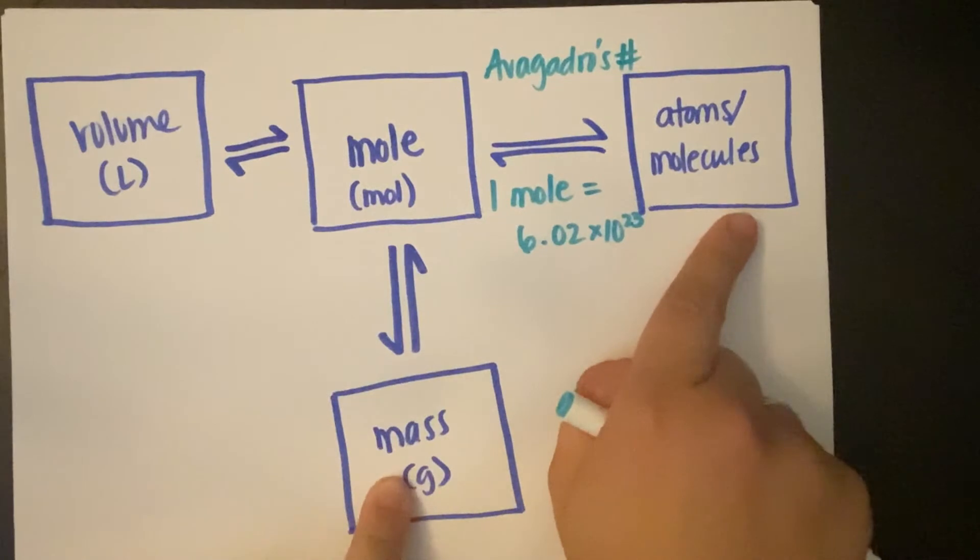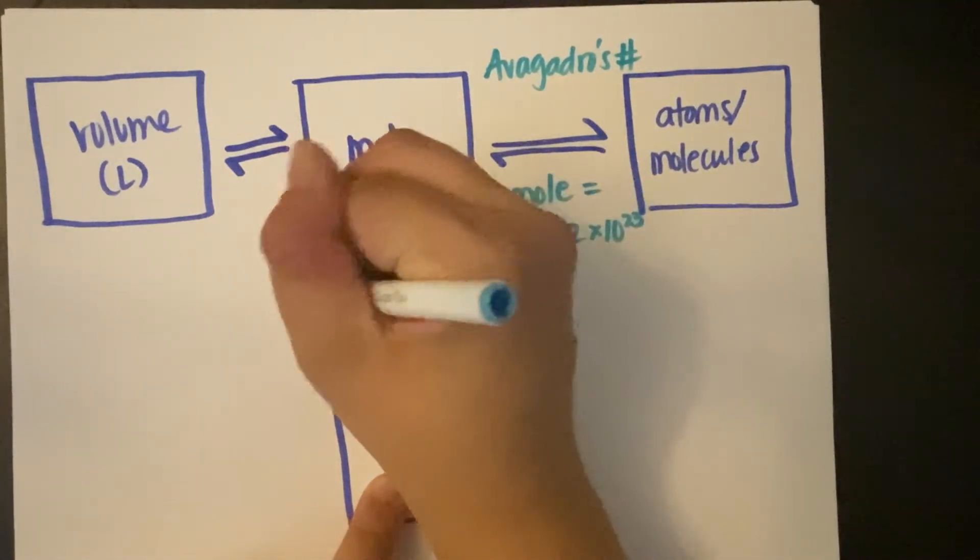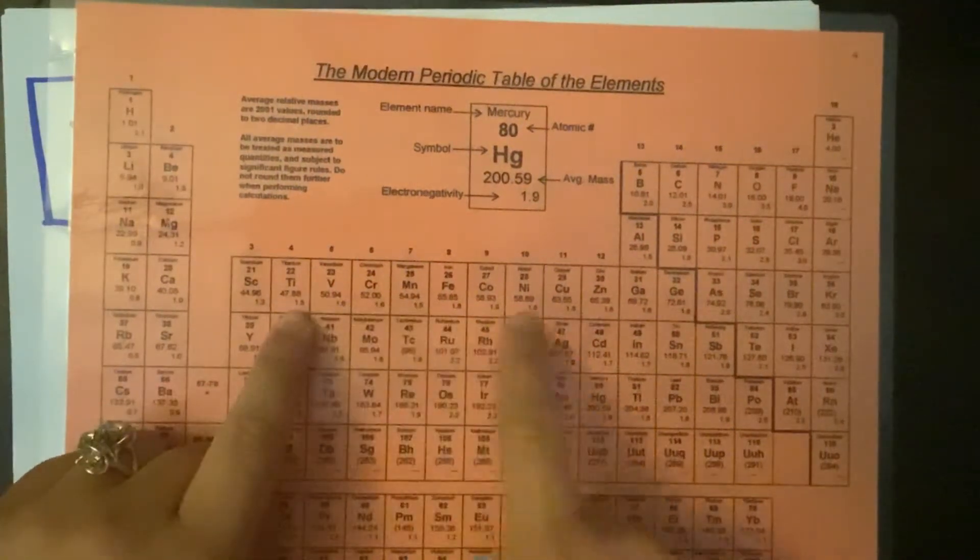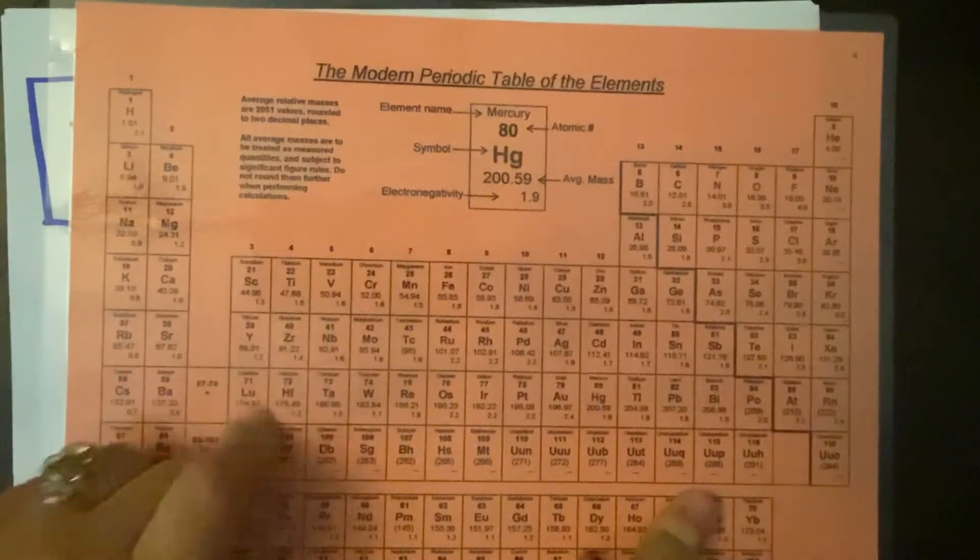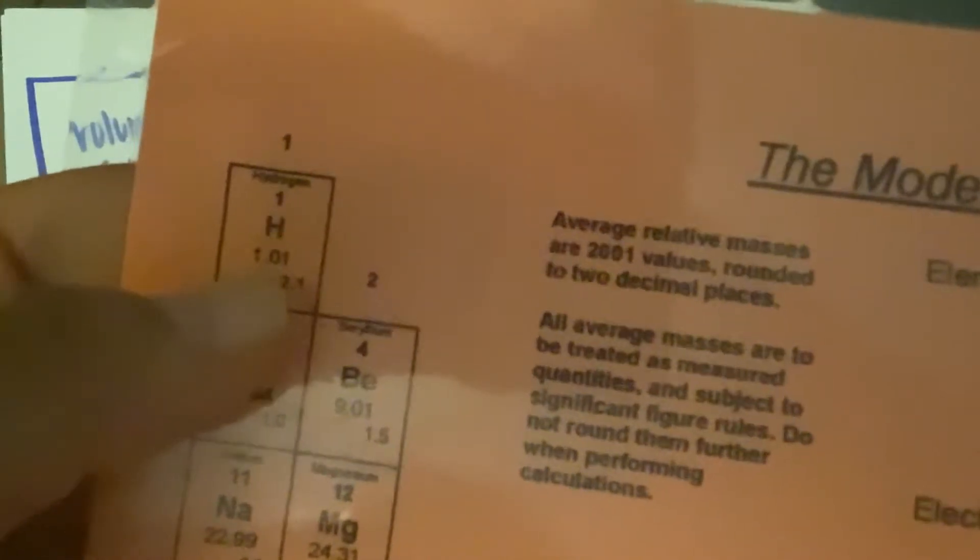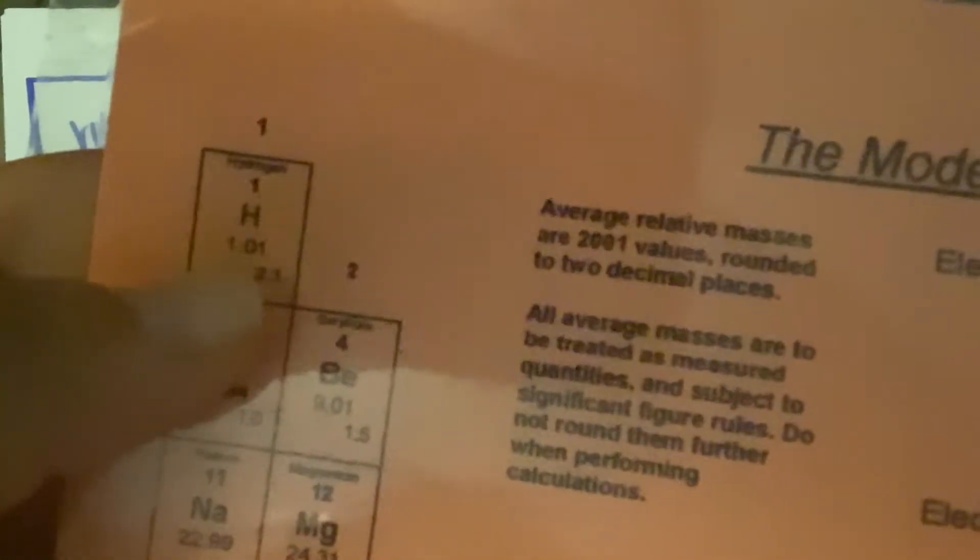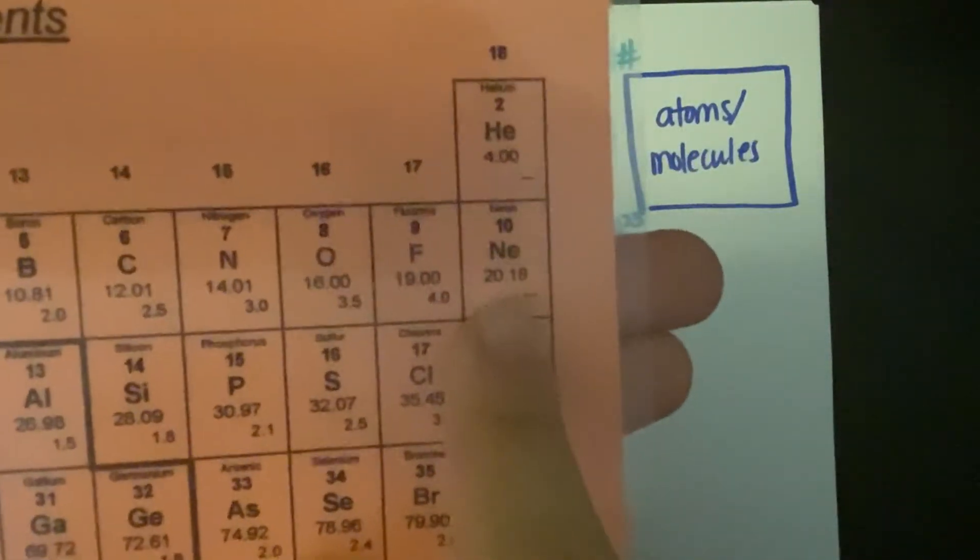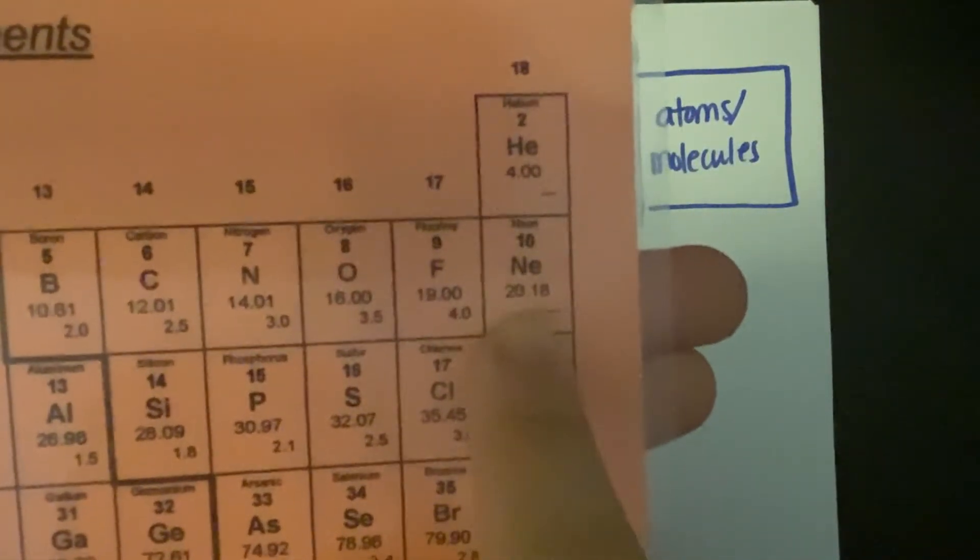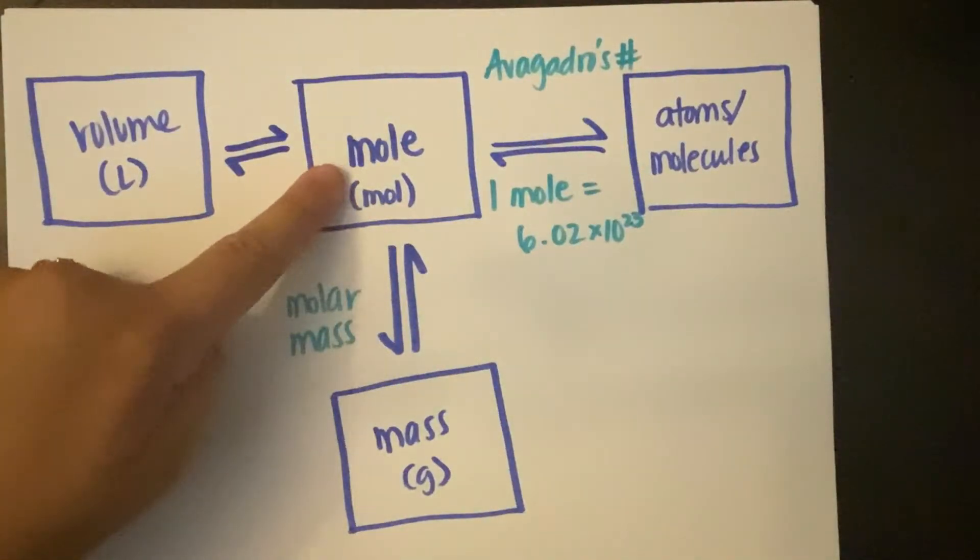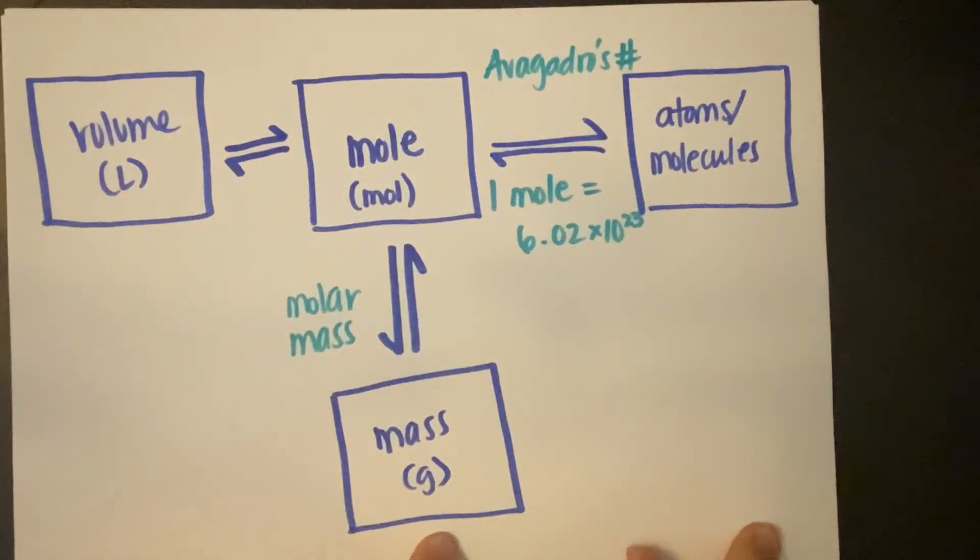To go from mole to mass, you are going to use molar mass. You're going to use molar mass and that is just, you know, your average atomic masses here on your periodic table. You're going to use that as your molar mass. So if I had one mole of hydrogen all by itself, just H, it would weigh 1.01 grams. If I had one mole of neon, its mass would be 20.18 grams. So that's how I would transfer between mole and mass.